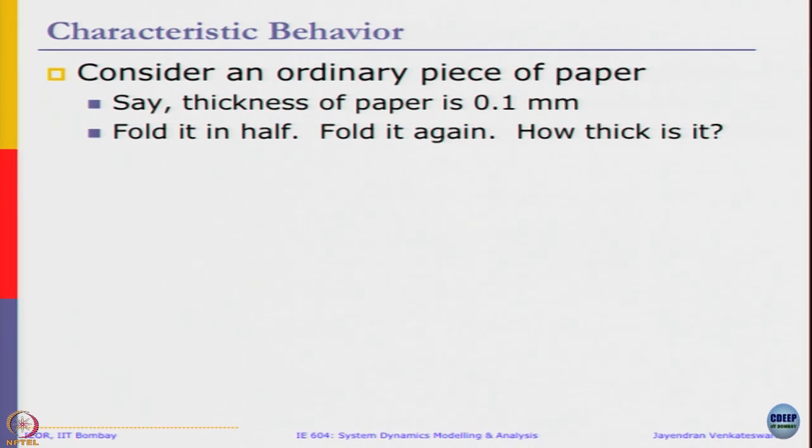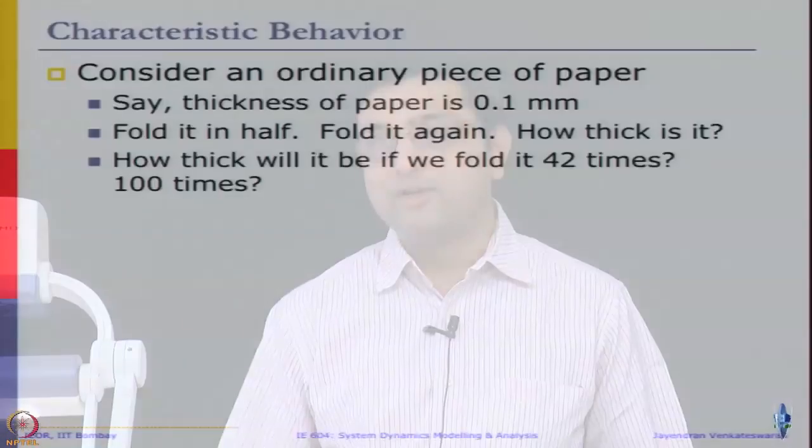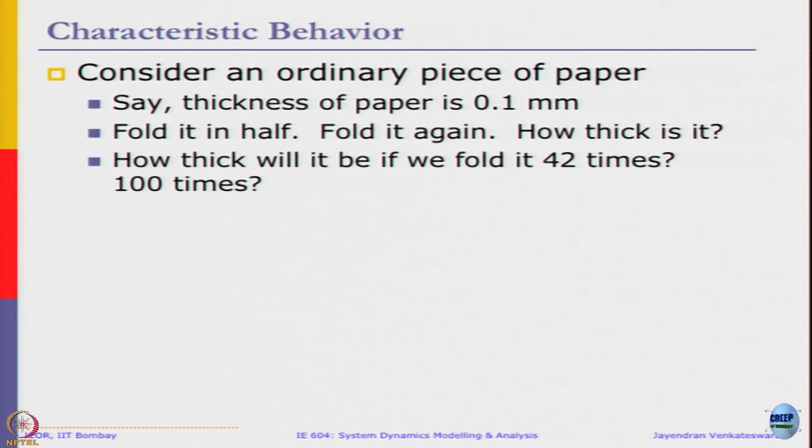Consider a paper thickness 0.1 mm, we fold it in half then we again fold it, how thick will it be? It should be 0.4 mm. If we fold it in half it becomes 0.2 then we fold it again then it becomes 0.4. With every fold it doubles. Any ordinary piece of paper probably not more than 7 times we can actually fold it.